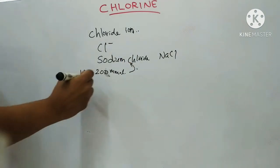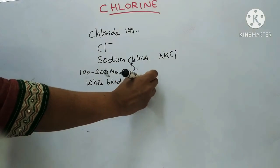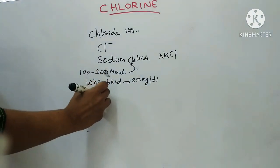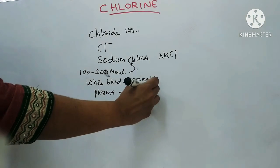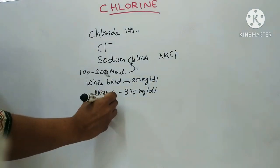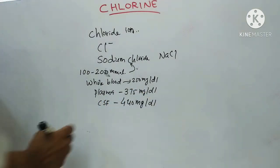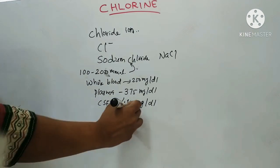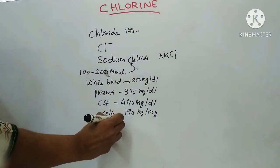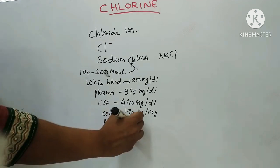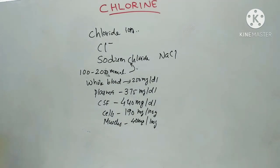Coming to the distribution: whole blood contains 250 mg per dl. Plasma is about 375 mg per dl. CSF is 440 mg per dl. In cells, it is about 190 mg per 100 gram. In muscles, it is about 40 mg per 100 gram. This is the distribution of the chloride ion.